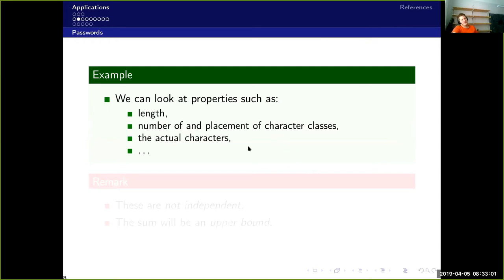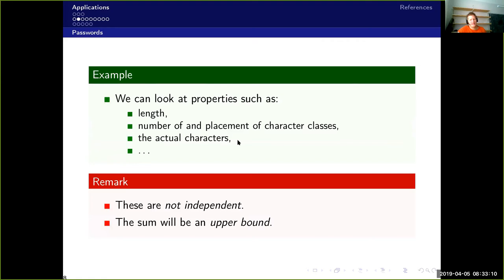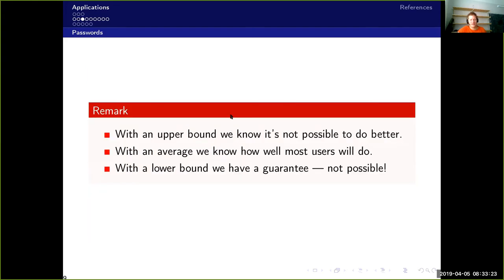So for instance, they looked at properties such as length, number and placement of character classes and actual characters. And these are of course not independent, so this sum will be an upper bound and not the actual entropy. But we're fine with the upper bound because if we have an upper bound, we know that this is the best that can happen. And if the best that can happen is quite bad, then we don't want to spend any more time on it. So basically the upper bound says that we can't do any better. The average tells us how well most users will do, and the lower bound of course would provide some guarantees, but that's not really possible.